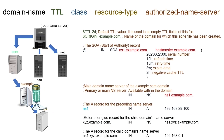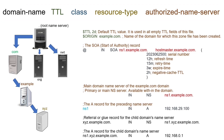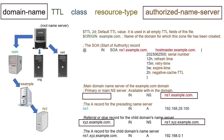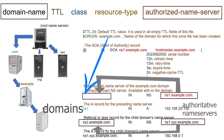It sticks the child domain's name servers with the parent domain's name server and uses the same syntax the authoritative name server record uses. The only difference between a referral or glue name server record and an authoritative name server record is that in the referral name server record, we use the domain name for which we are creating the referral in the domain name field.